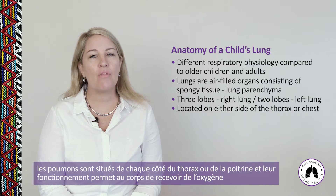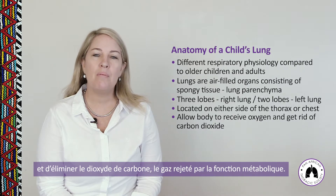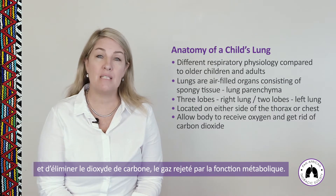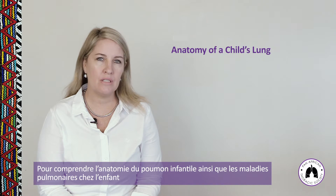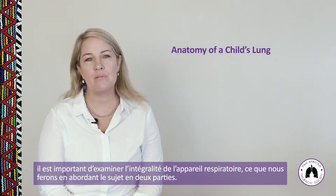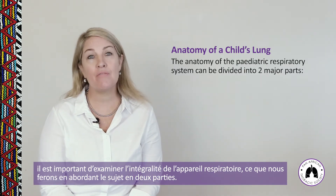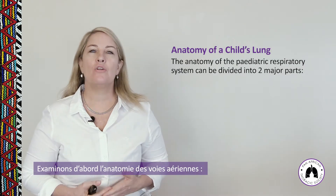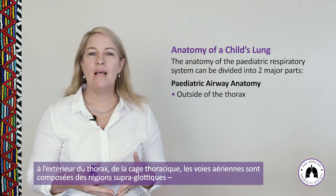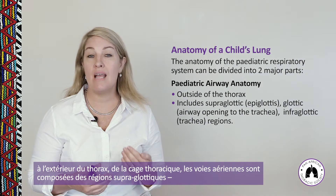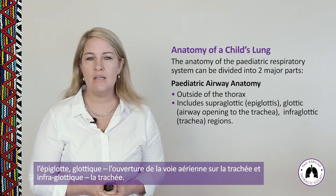The lungs are located on either side of the thorax and function to allow the body to receive oxygen and to get rid of carbon dioxide, the waste gas from metabolism. To understand pediatric lung anatomy and lung disease in children, it is important to look at the entire respiratory system. Outside of the thorax, the airways include the supraglottic, which is the epiglottis, the glottic airway opening of the trachea, and the infraglottic trachea regions.